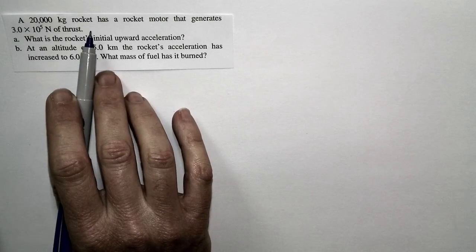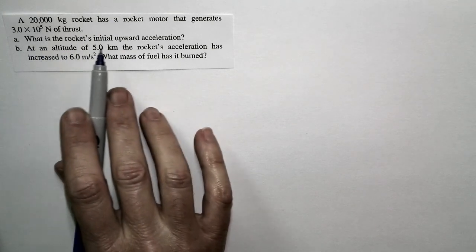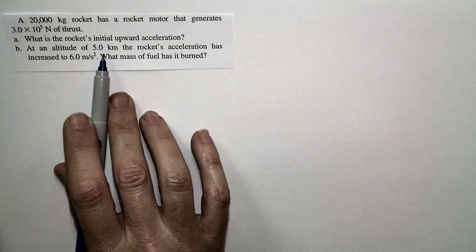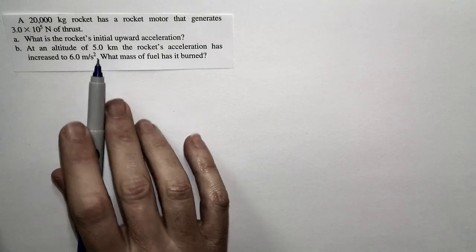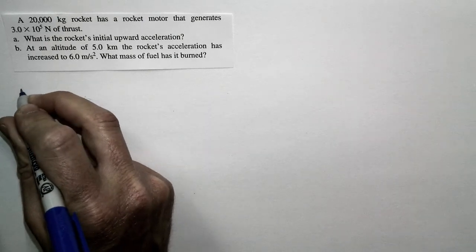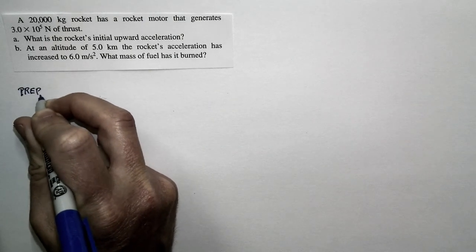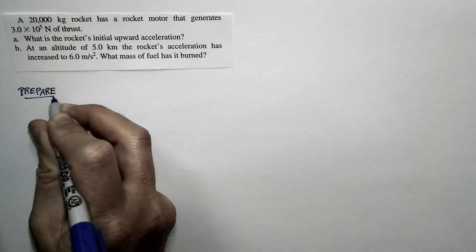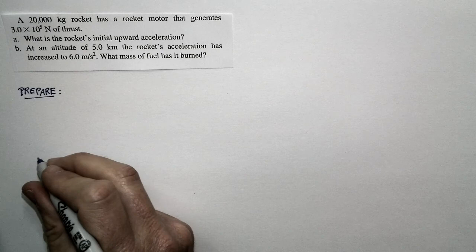Here's a question about a rocket that has a motor with a certain amount of thrust. We're asked about its acceleration initially and after it's risen to a certain height. This is a rocket taking off from the pad, starting with a certain initial acceleration. As the rocket rises, it's burning fuel, so its mass is decreasing and its acceleration is going to increase.